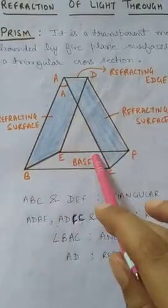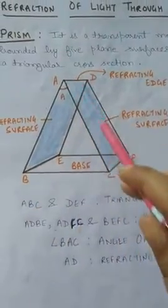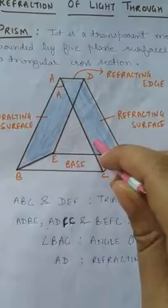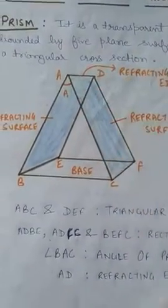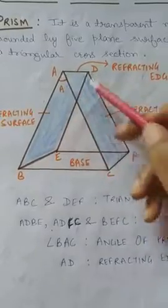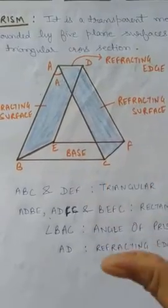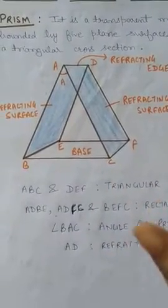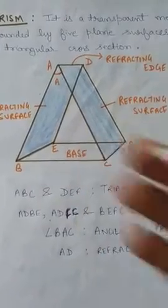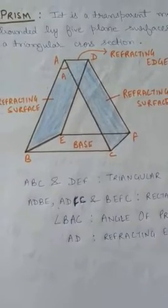This is the base of the prism. The two refracting surfaces, shown as the shaded region, are inclined to each other and they make an angle. This angle is known as the angle of prism. The line joining the two refracting surfaces is known as the refracting edge. These are the important terms: refracting surfaces, refracting edge, angle of prism, and base of the prism.